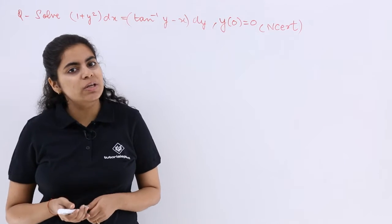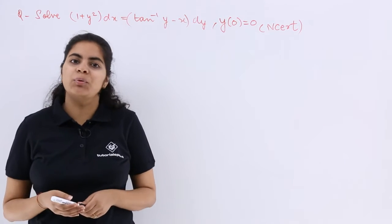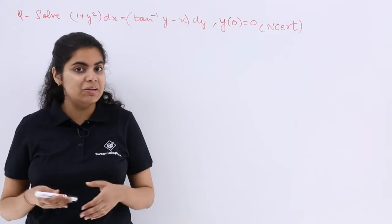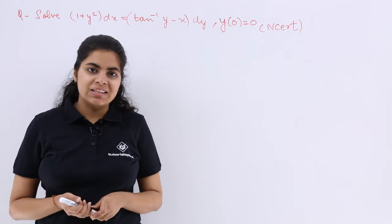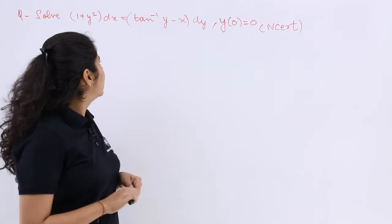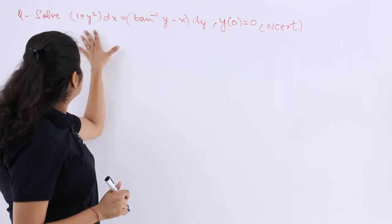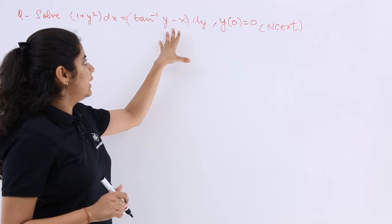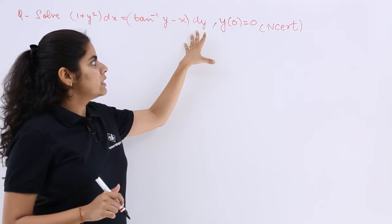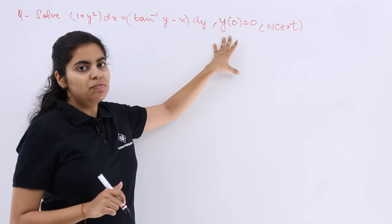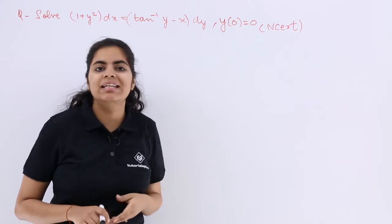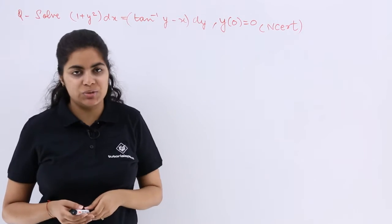Let's see this question. This question is from your NCERT books but holds a wide importance. The question is: solve (1 + y²)dx = (tan⁻¹y - x)dy, with y(0) = 0. This is an NCERT book question.